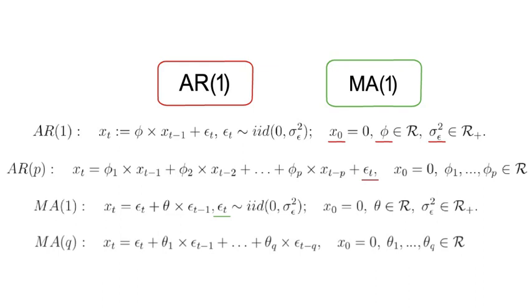Now, so the MA process is basically a weighted average of past forecast errors. In contrast, an AR process is a weighted average of past forecasts.